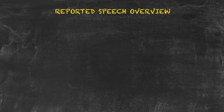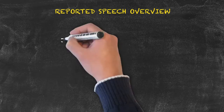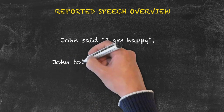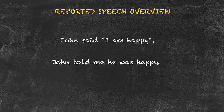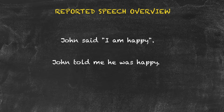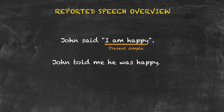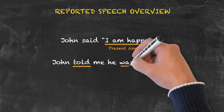Let's quickly review reported speech. Looking at the example: John said 'I am happy.' In reported speech, this changes to 'John told me he was happy.' Many people ask why we make these changes. If we said 'John said he is happy,' it would indicate he's happy now at the time of reporting, rather than at the time he said it. The general rule is we move the verb one tense back — 'I am happy' is present tense, so moving it back gives us past tense.